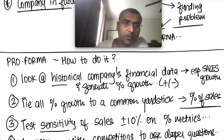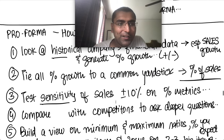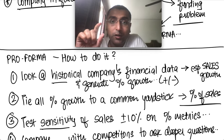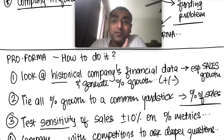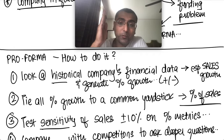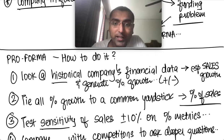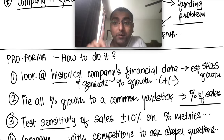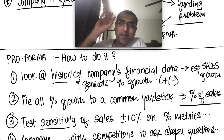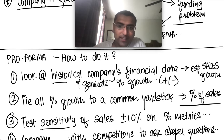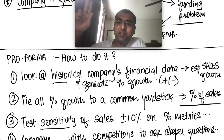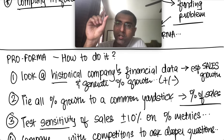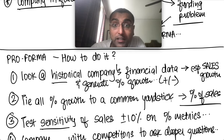Now let's walk through the five — actually six — steps to building Proforma statements. First, look at the company's historical financial data for the last five years if possible. Find the percentage growth in each area, especially sales growth — it could be positive, negative, slowing, or accelerating. Then tie all those percentage growths to a common yardstick: percentage of sales. The top line is sales, and you track what's happening to everything else relative to it.